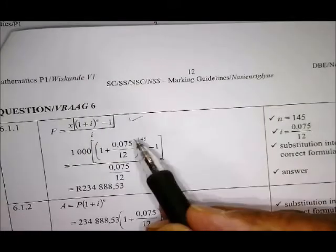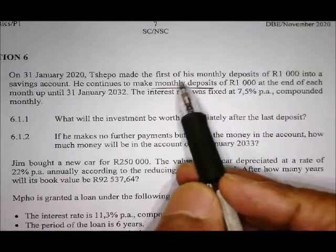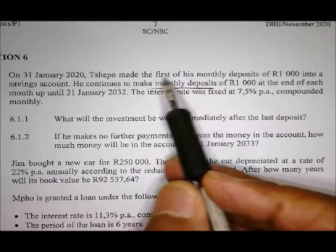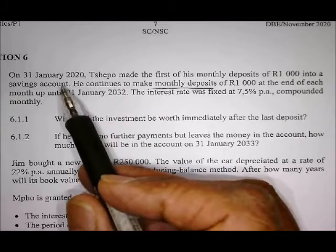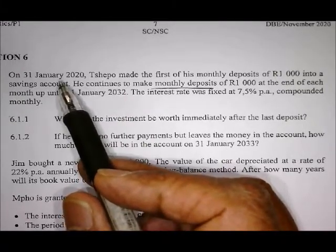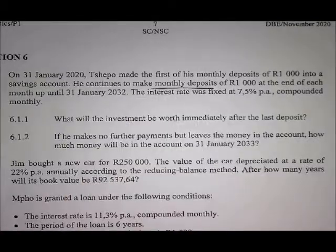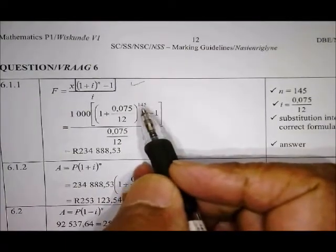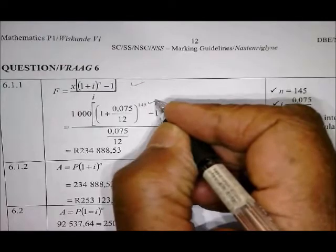Now, of course, you must say 145, because they told you they made, Chappel made the first of his deposits into a savings account. So he does the deposit immediately. So that will increase the period with another month. And therefore, instead of 144, we use 145. So I hope it is clear where that is coming from.